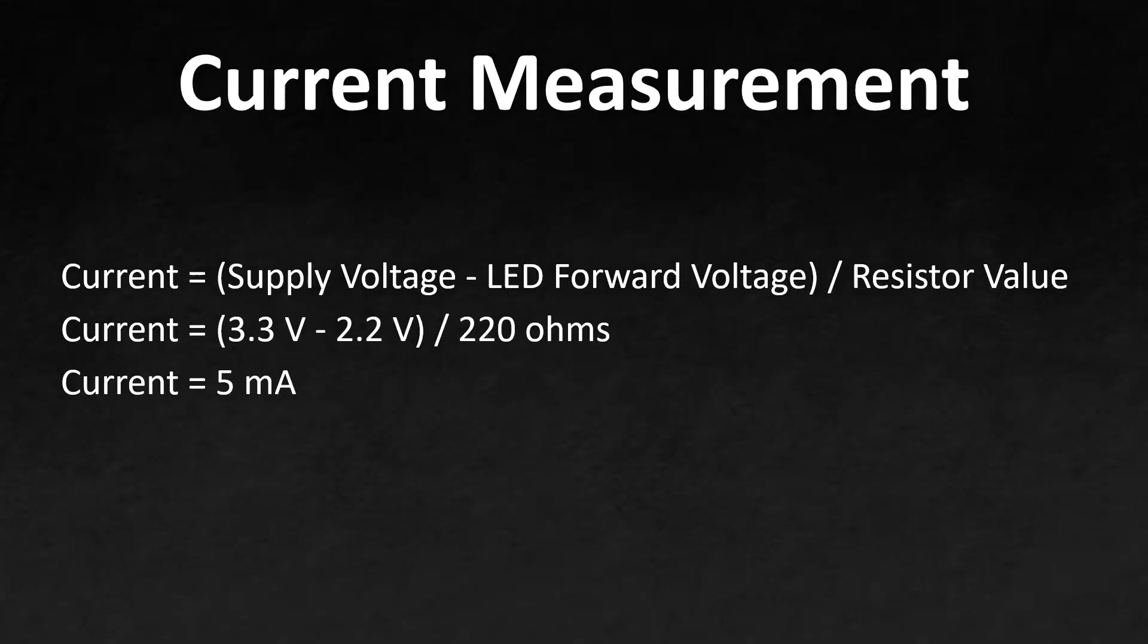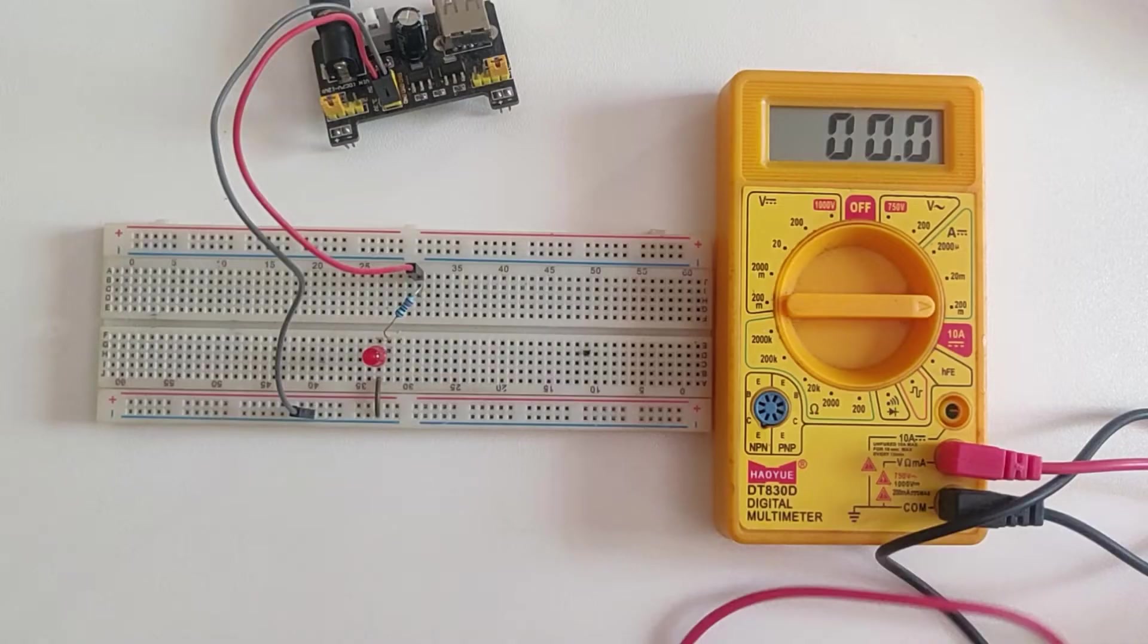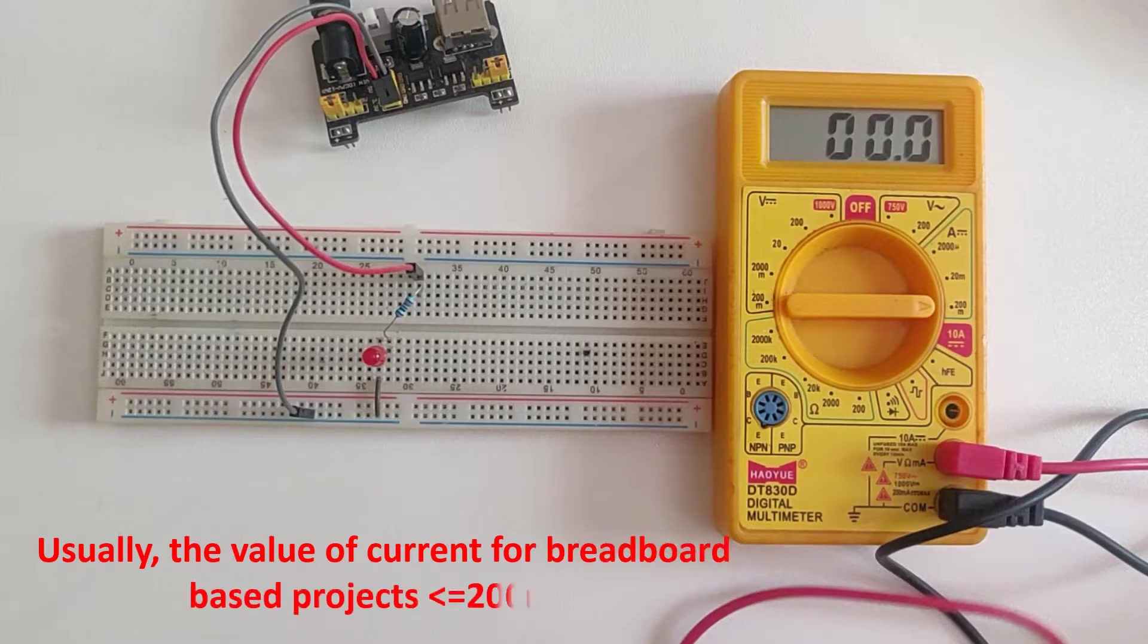So here I'm expecting something under 200 milliamperes, right? So I'll have to connect the red lead of the multimeter to the 200 milliamperes port. Now generally speaking, for breadboard-based projects, the value of the current is under 200 milliamperes.